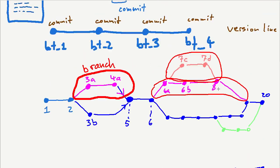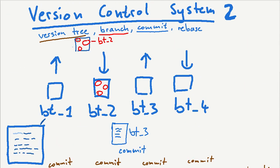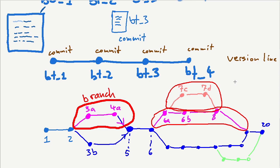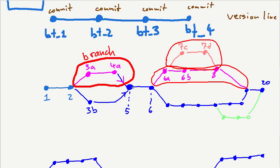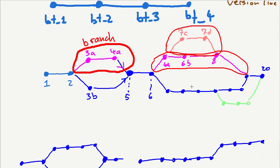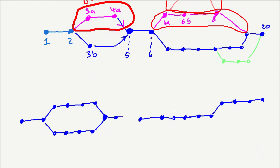So going back to version line vs. version tree — many people prefer a version line. They want everything to be straight because it's so much easier: version 4 was after version 3, version 3 was after version 2. But when you have a tree, everything happens at the same time and it's very difficult to comprehend. So that's the point where you say: I want to rebase. I want to pretend that everything happened sequentially, even if it didn't. This is what rebasing is.